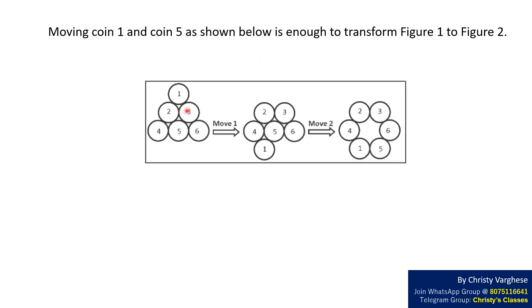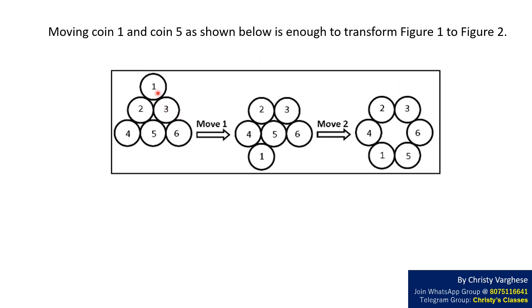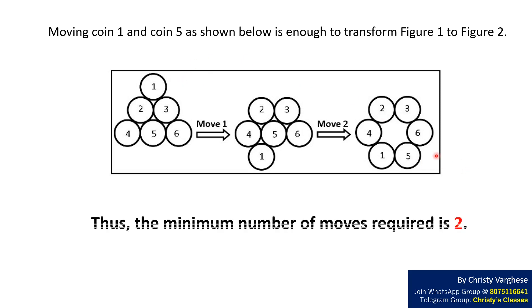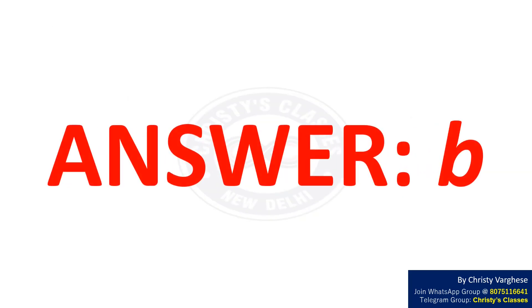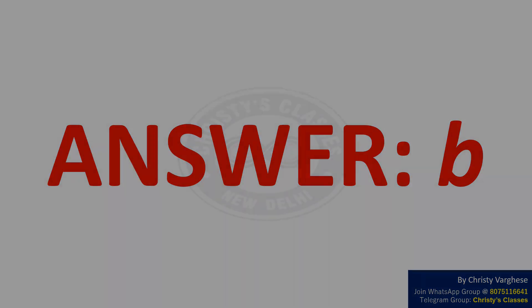Moving coin 1 and coin 5 as shown below is enough to transform figure 1 to figure 2. Thus, the minimum number of moves required is 2. Hence, the right answer to the question is option B.